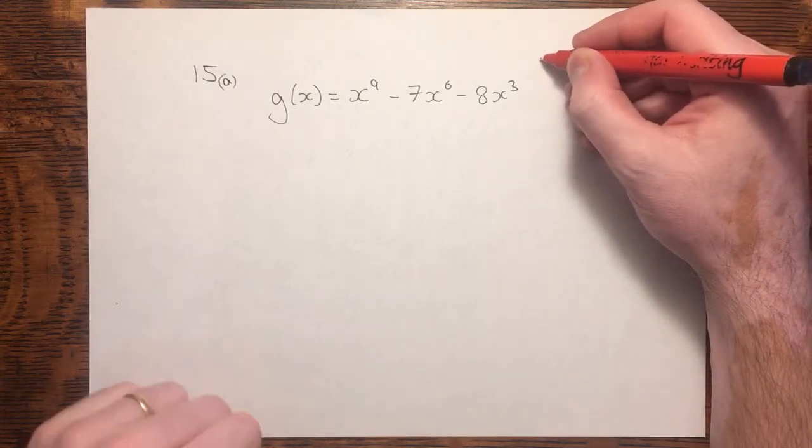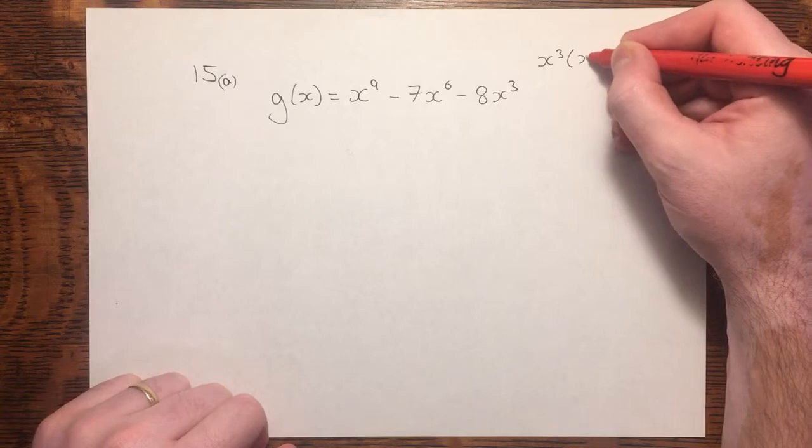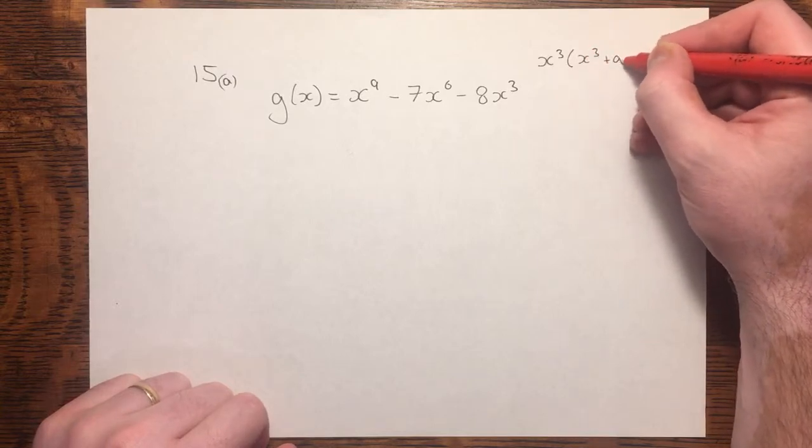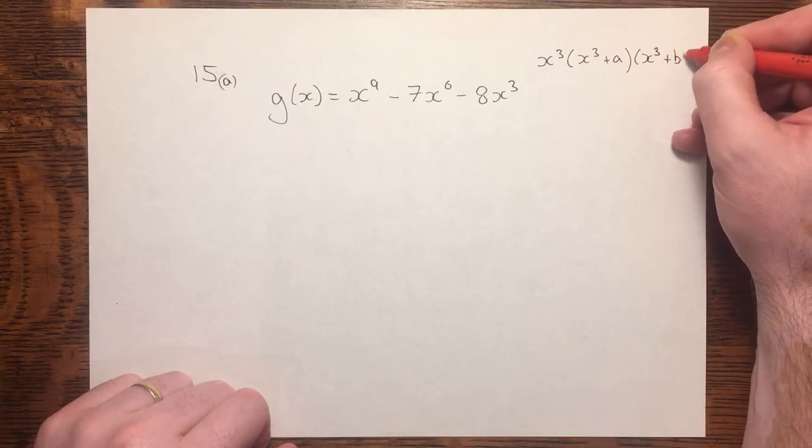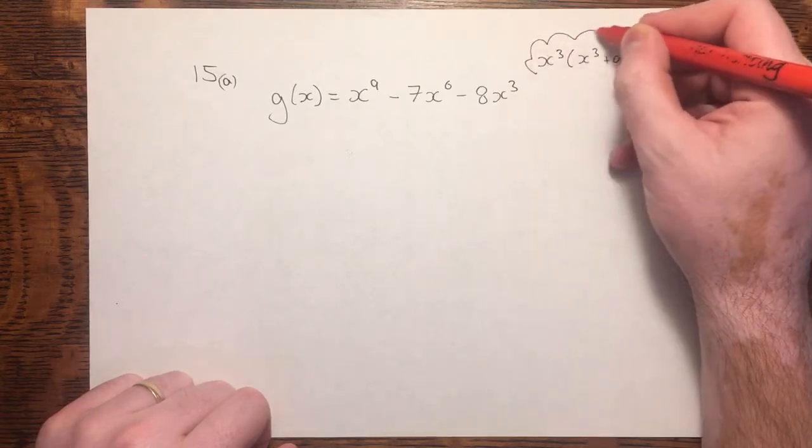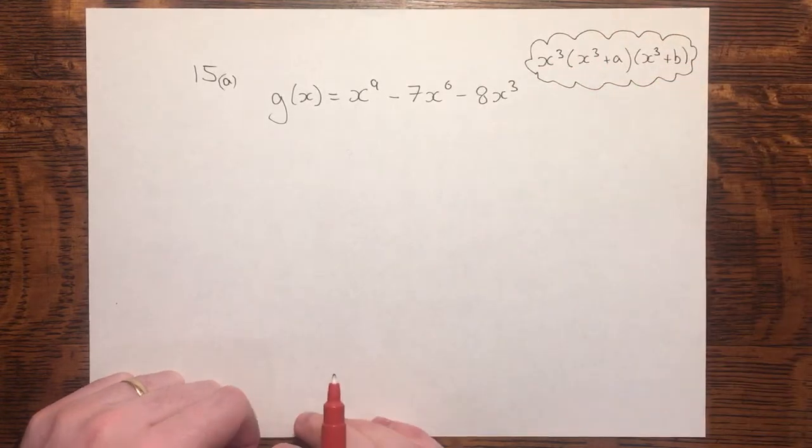We're told that we need to factorise it into the form x cubed brackets x cubed plus a, x cubed plus b. So we're at least given some guidance into how we would factorise this.